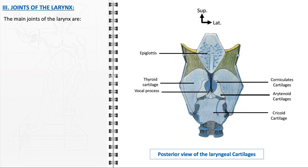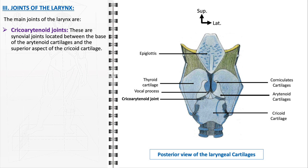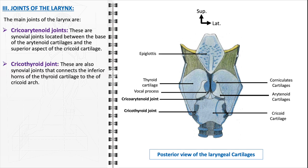The joints of the larynx play a pivotal role in its functionality. The primary joints are the cricoarytenoid and cricothyroid joints, both classified as synovial joints with fluid-filled capsules that facilitate smooth movement. The cricoarytenoid joints, located between the arytenoid cartilages and the superior aspect of the cricoid cartilage, allow rotation and sliding movements of the arytenoids, essential for opening, closing, and tension adjustment of the vocal cords. The cricothyroid joint connects the inferior horns of the thyroid cartilage to the cricoid arch, enabling the tilting and sliding of the thyroid cartilage, which results in the tension and lengthening of the vocal cords to control pitch. Together, these joints facilitate movements vital for vocalization, breathing, and protecting the airway.